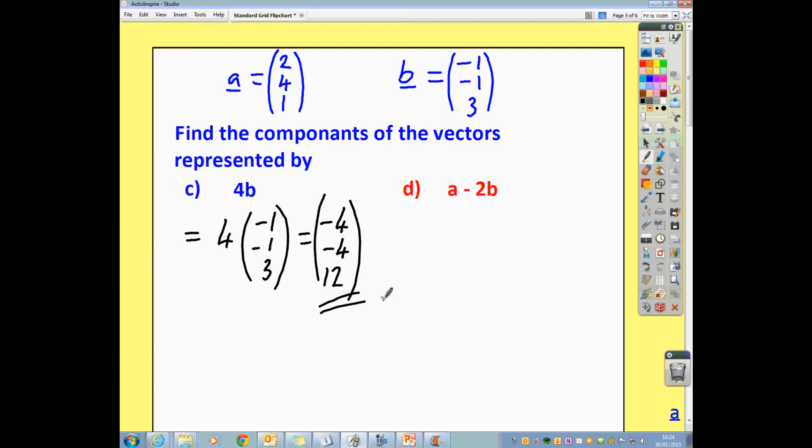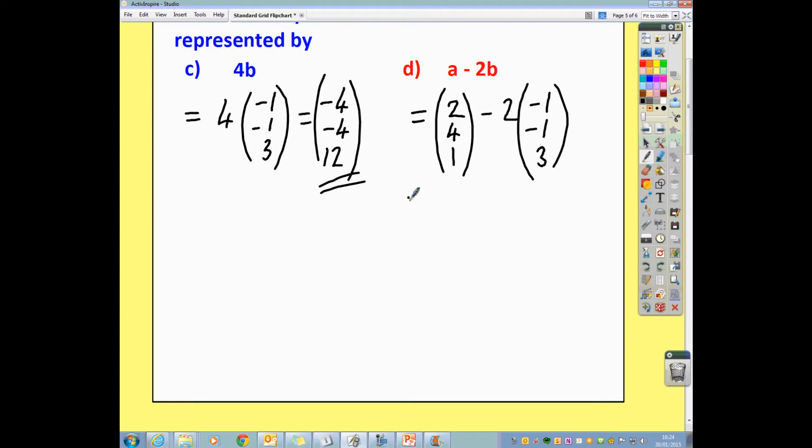For this one, we're doing a minus 2b. So, we end up with (2, 4, 1). That's vector a. And we're taking away two lots of vector b, which is (-1, -1, 3). So, if I deal with 2b first of all, then we'll do our subtraction. So, we have (2, 4, 1). And we're taking away two times (-1, -1, 3). Two times -1 is -2. Doubling -1 again gives me -2. Doubling 3 gives me 6. Then I can do 2 minus -2. During my subtraction, I get 4. 4 minus -2, I get 6. 1 minus 6, I get -5. And that's all there is to it.